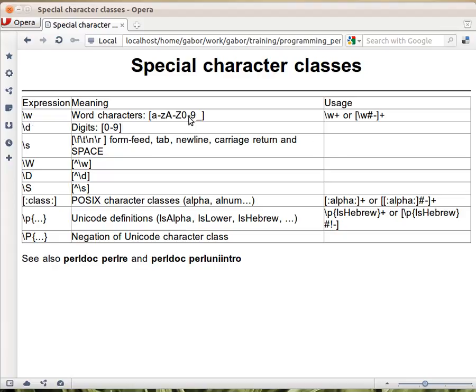Backslash w means word character. Backslash d means digit between 0 to 9. Backslash s means white space is one of the five characters: tab, newline, carriage return, space, and form feed which is not that much used anymore.